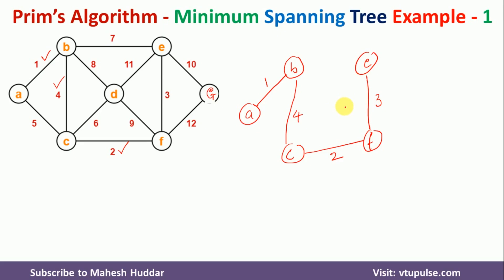Again, I have to find the neighbors of all these nodes with the minimum weight. Among the neighbors, B's neighbors are E and D with weights 7 and 8 respectively. Neighbor of C is D with weight 6. The neighbors of F are D and G. Among all these, the minimum is C to D with weight 6. So we will draw an edge from C to D and write the weight as 6.